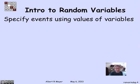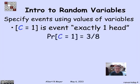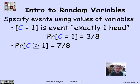Once we have these random variables defined, a convenient use is to define events. The event that c equals 1 — exactly one head — has probability 3/8, since three of the eight outcomes have exactly one head. The event that c is greater than or equal to 1 means at least one head; the only way it fails is all tails, so the probability is 7/8.